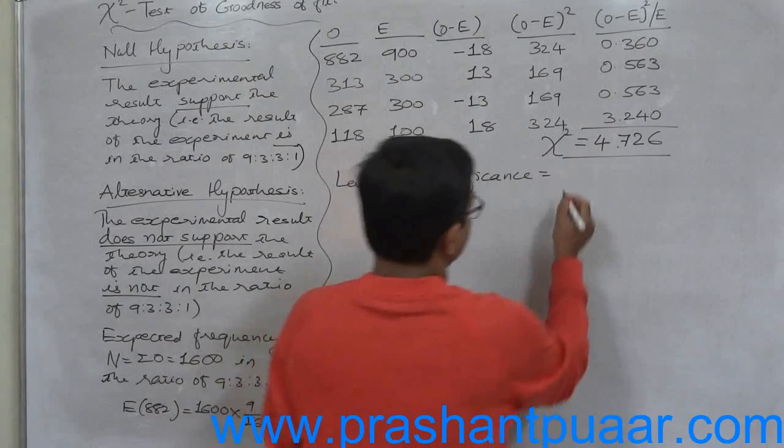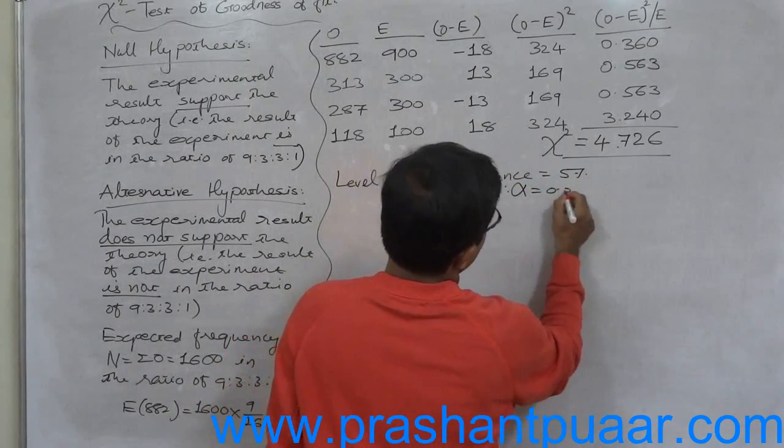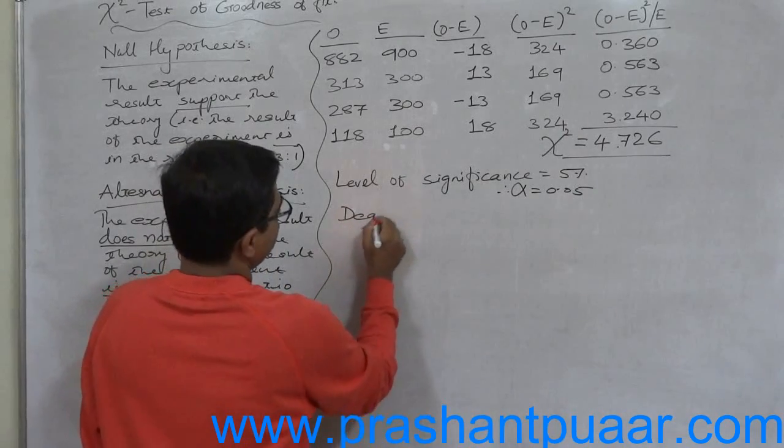No further information about level of significance, so we are going to take it as 5%, that means alpha equals 0.05.